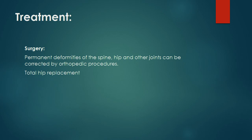Surgery: Permanent deformities of the spine, hip, and other joints can be corrected by orthopedic procedures. The disability has been considerably reduced by total hip replacement, which has improved the outlook for patients with ankylosing spondylitis.